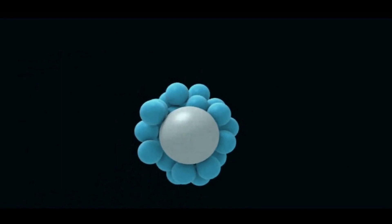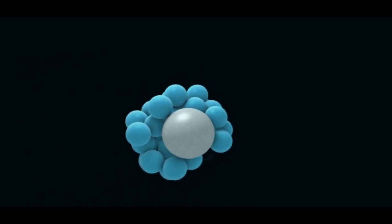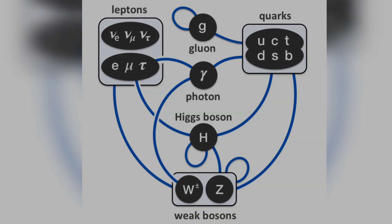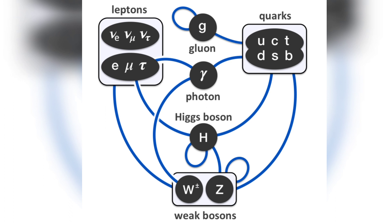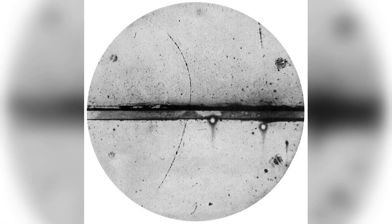And they are held by their partners called leptons, which are: electron, muon, tau, electron neutrino, muon neutrino, and tau neutrino. All of them have antiparticle partners too.